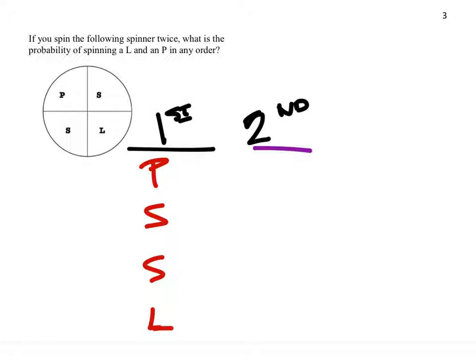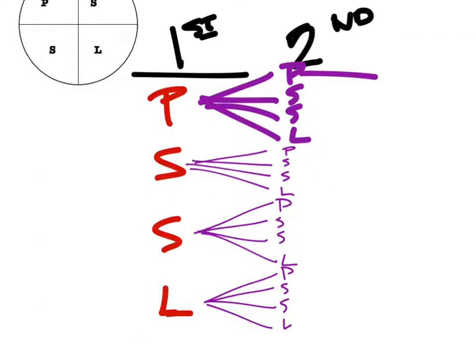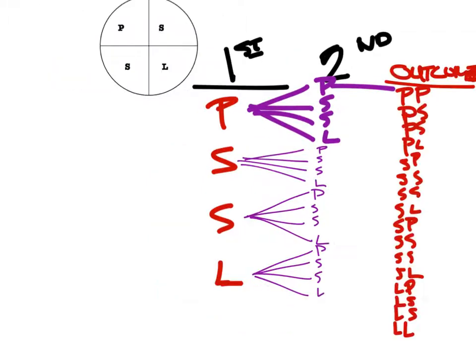On the second spin, from the P, you could get either P, S, S, or L. And from the S, the two S's and the L, the same thing. And now we have all of the outcomes. Well, not the outcomes yet, but let's find them. All right, so here are all of the outcomes.